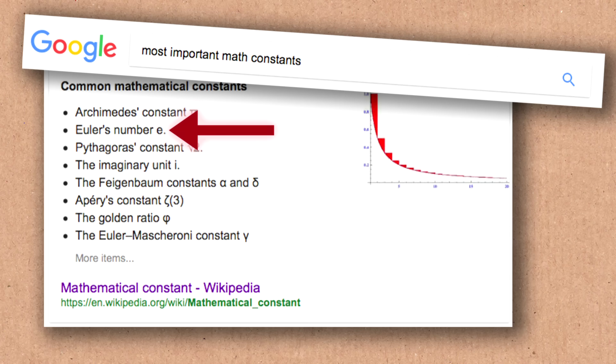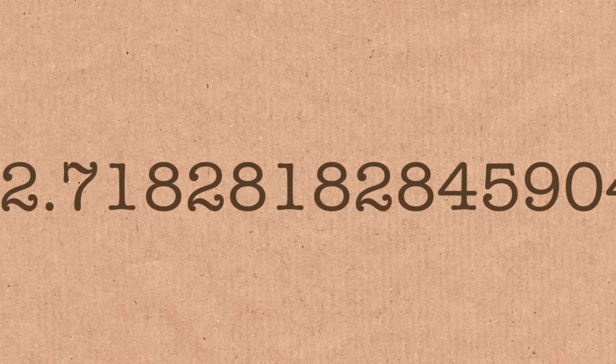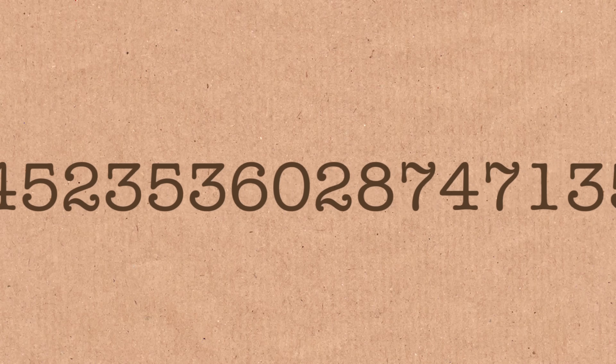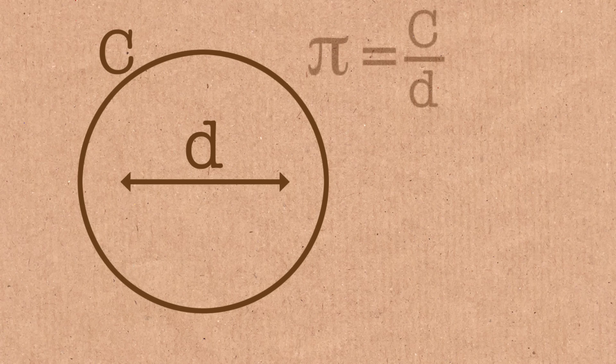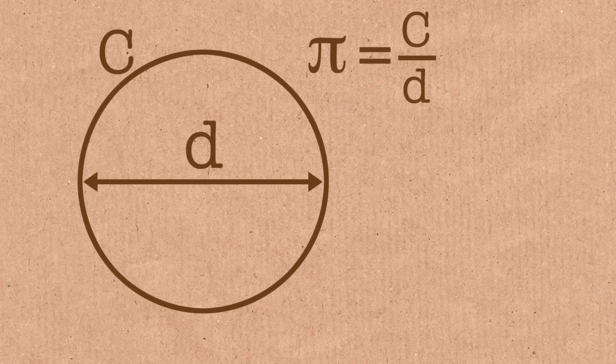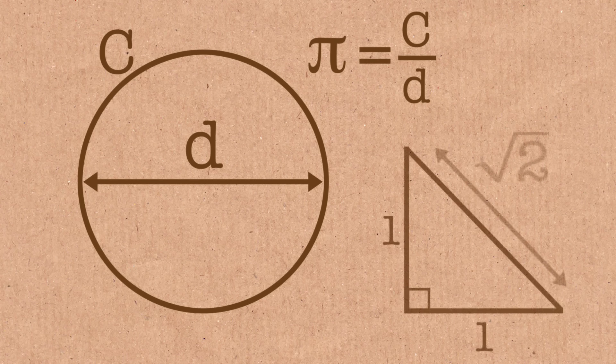E is an irrational number and it's equal to 2.718281828, something, something. The problem with E is it's not defined by geometry. Pi is something that's defined by geometry — it's the ratio of a circle's circumference and its diameter, something the ancient Greeks knew about. A lot of mathematical constants go back to the ancient Greeks, but E is different. E is not based on a shape, it's not based on geometry.